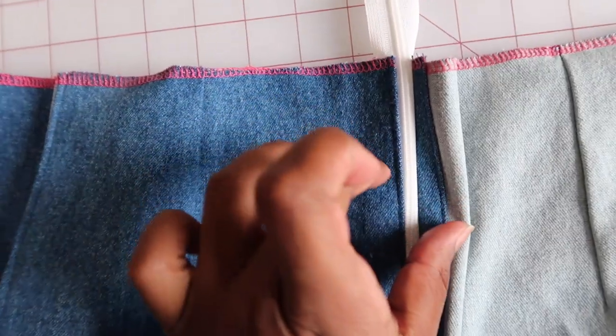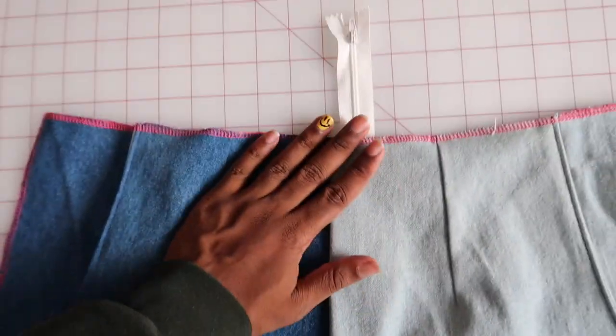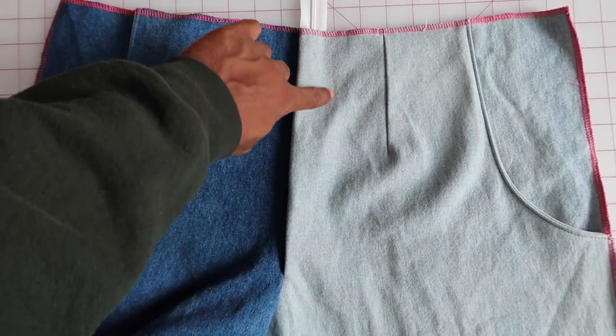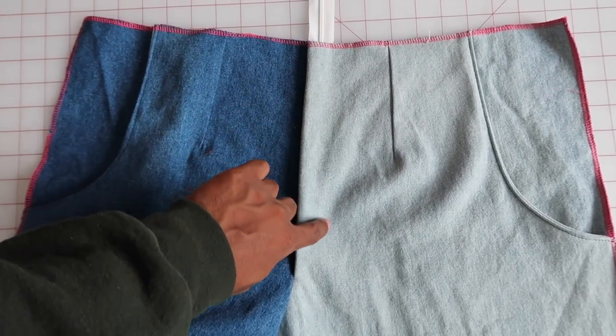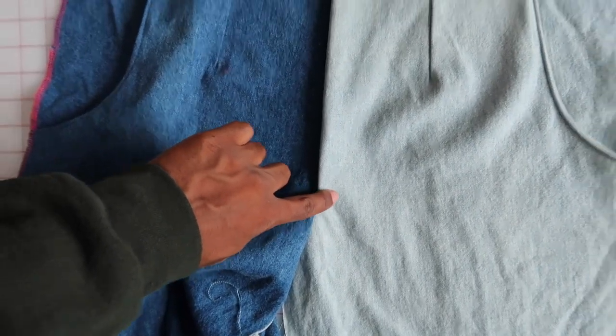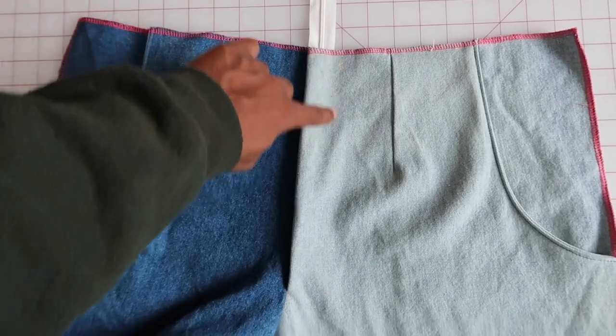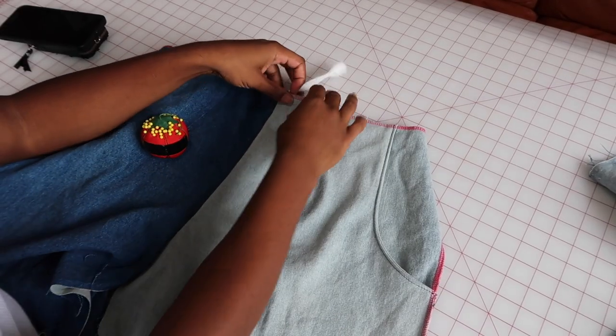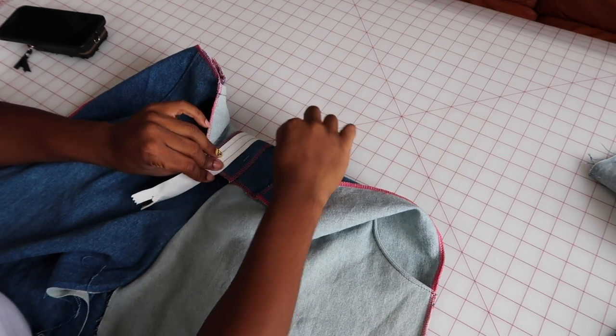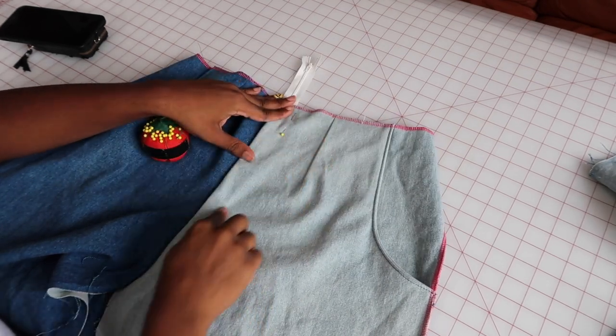So, once you finish that and you zip your zipper up, it should look something like this, which is exactly what we want. So, now to keep everything in place, we're just going to sew a straight stitch down and around until we get to this point here, our apex point, to make our little zipper fly. And when you're pinning in place, you want to make sure that you're also catching this little placket piece as well, so that way that stays down once the stitch is in place.